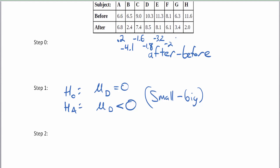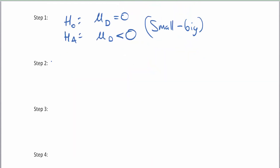3.4 minus 6.3 is negative 2.9, and 2.0 minus 11.6 is negative 9.6. Almost all of these differences are negative, and even the one non-negative value is close to zero. This looks strongly like it will be less than zero, but is it strong enough to reject the null hypothesis? Since the problem states the differences have a normal distribution, we don't need an outlier check even though the sample size is under 30.